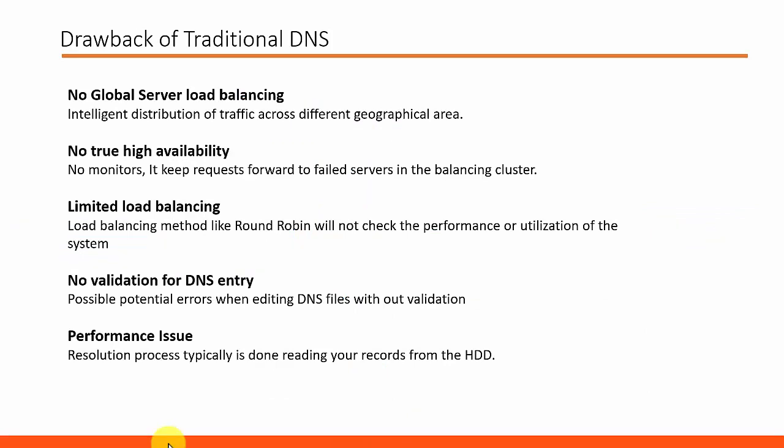This traditional DNS system works fine, but when we talk about availability and performance, this system has some drawbacks. Lack of global server load balancing stops us from distributing workloads to different geographical areas. There is no method to monitor a failed server in a cluster, which keeps requests forwarding to failed servers. Requests are balanced by round-robin method — which server is more utilized or performing better is not considered in the load balancing decision. Mistakes may happen as there is no validation when creating or editing a DNS entry, and performance issues may arise if the server uses HDD for DNS resolution.